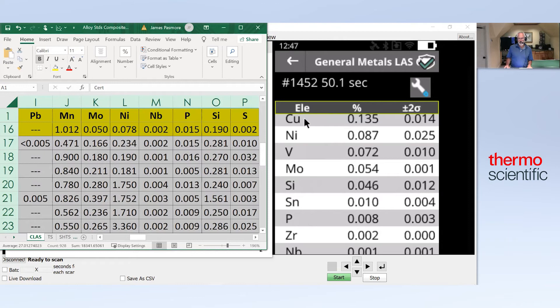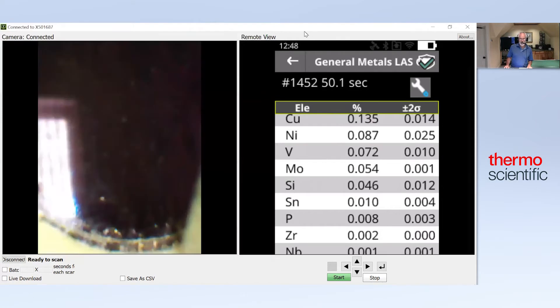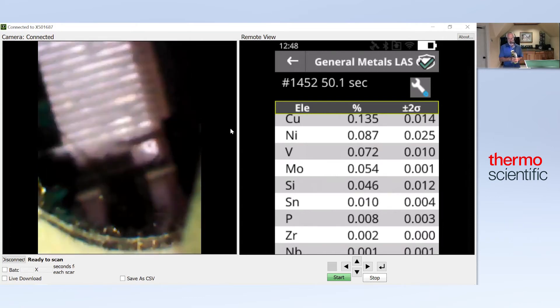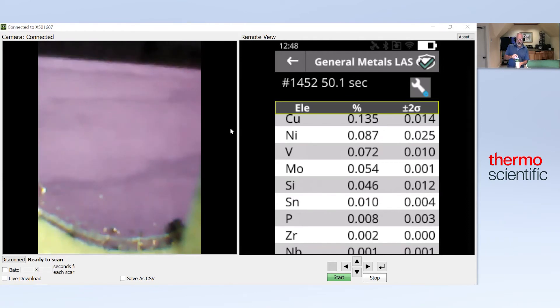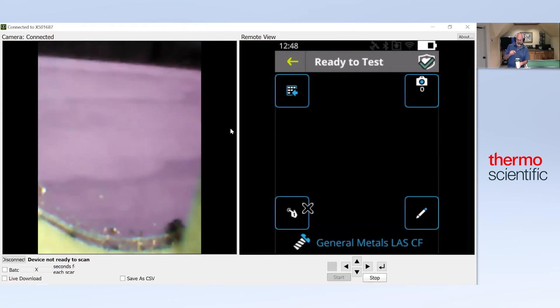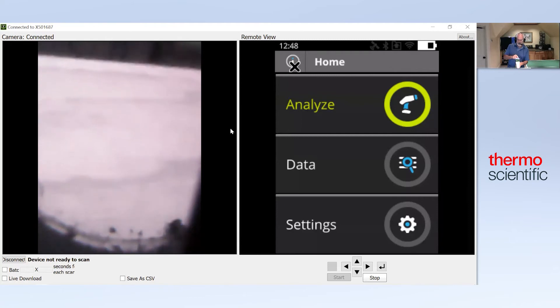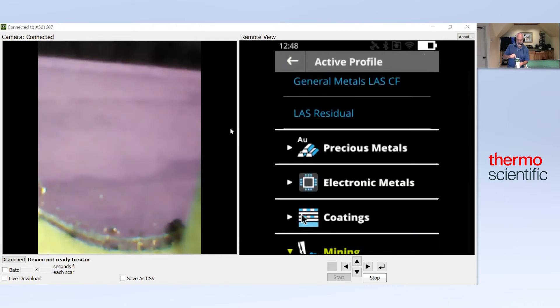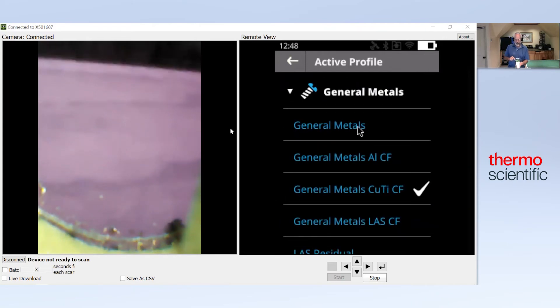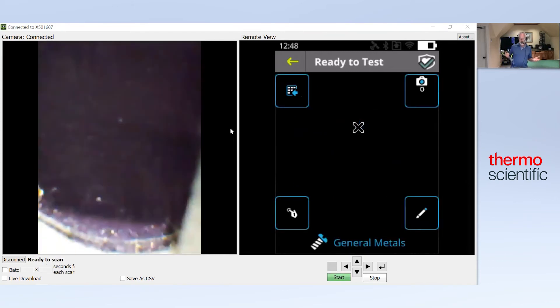We're going to switch now to another application, quick sorting. This is an application you'll see typically in the scrapyards. Some of the most important alloys in scrapyards are stainless steels, aluminum alloys, and then you get into the high value like the nickel base and sometimes coppers and titaniums. I'll start with the aluminums because that's an area most people have issues with in terms of the ability to sort quickly. I'm going to switch my model to the general metals. This is the factory calibration, and this is the one you'll be using most of the time for almost everything.